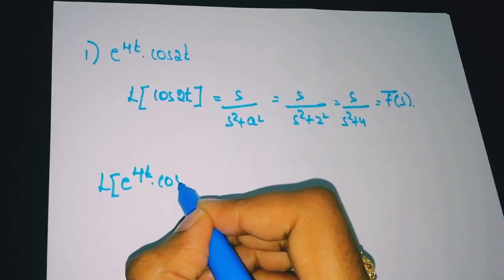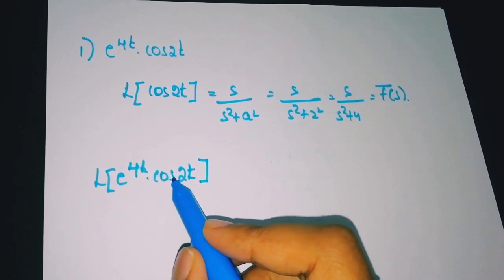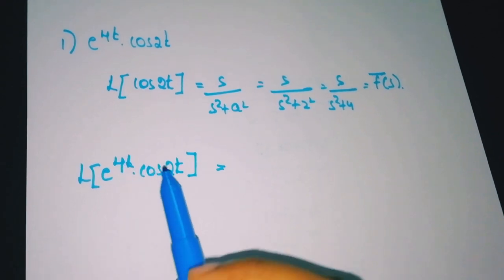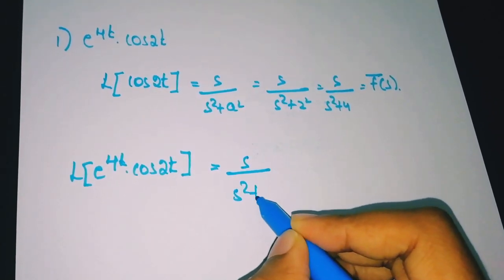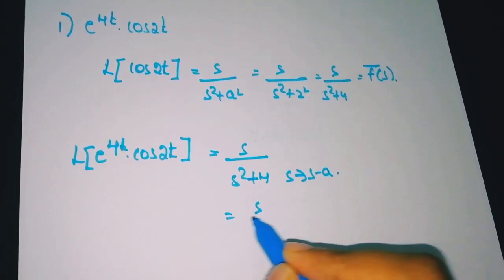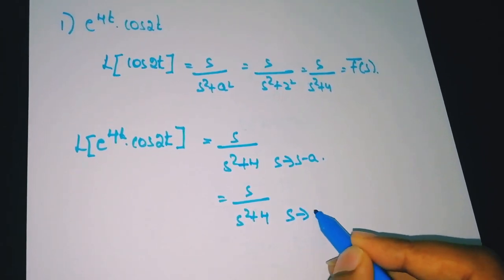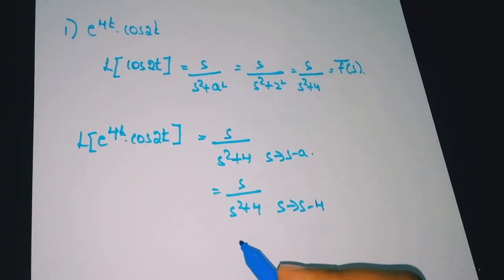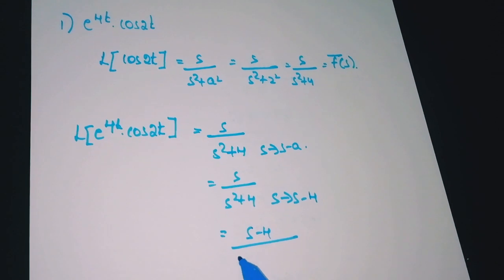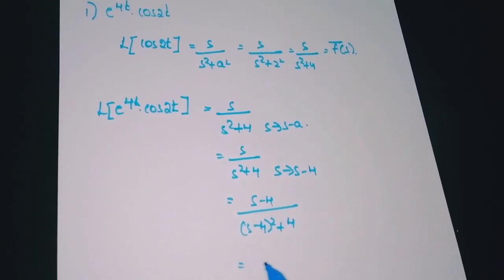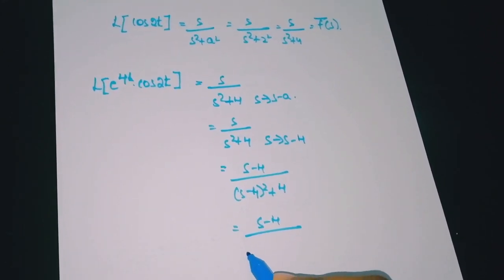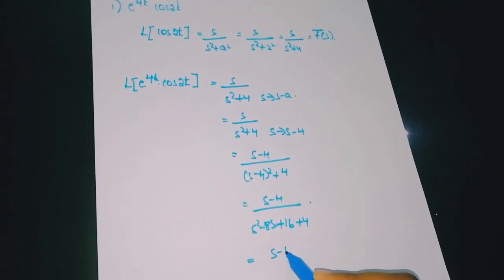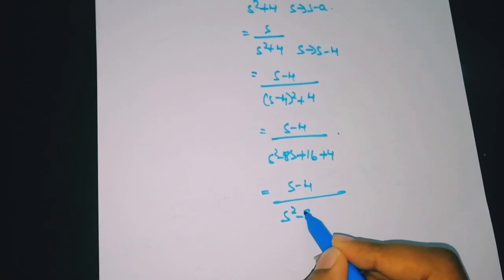Now applying the first shifting theorem to find L{e^(4t)·cos(2t)}: we take L{cos(2t)} = s/(s²+4) and replace s with s−4. So we get (s−4)/((s−4)²+4), which expands to (s−4)/(s²−8s+16+4) = (s−4)/(s²−8s+20).